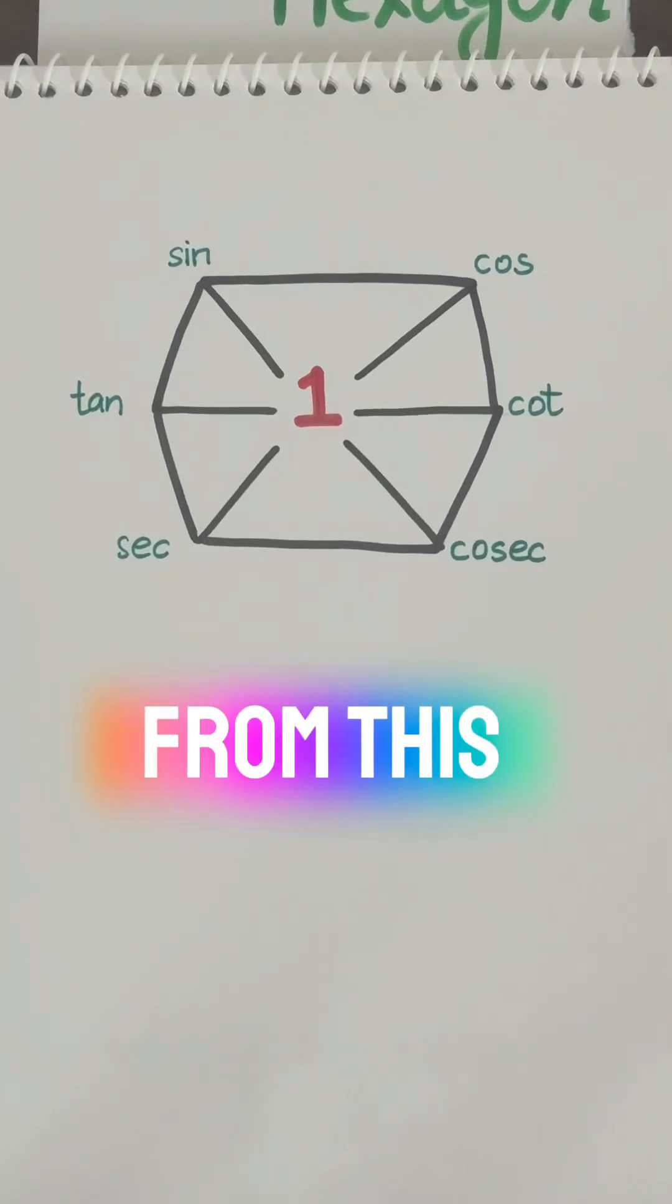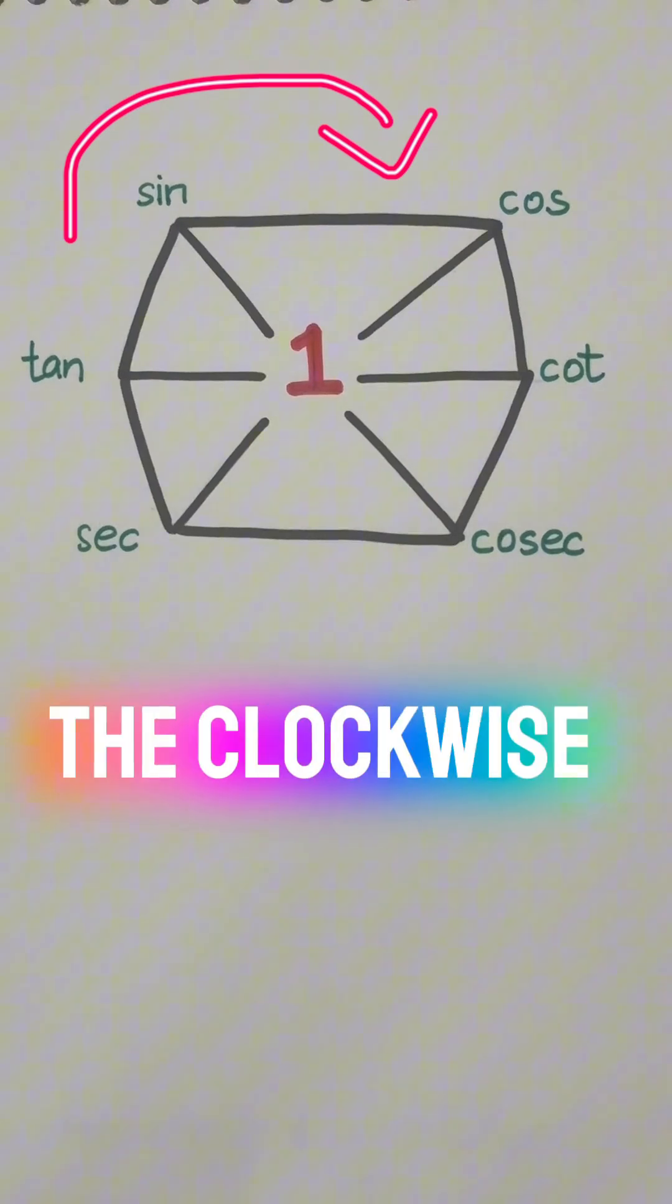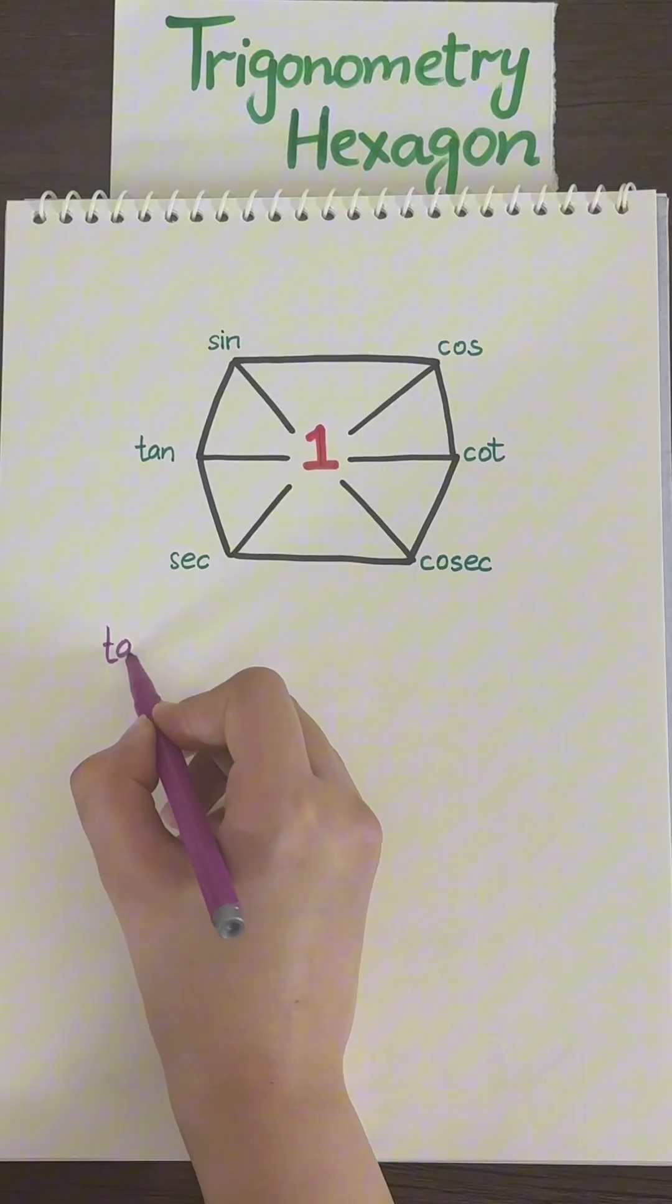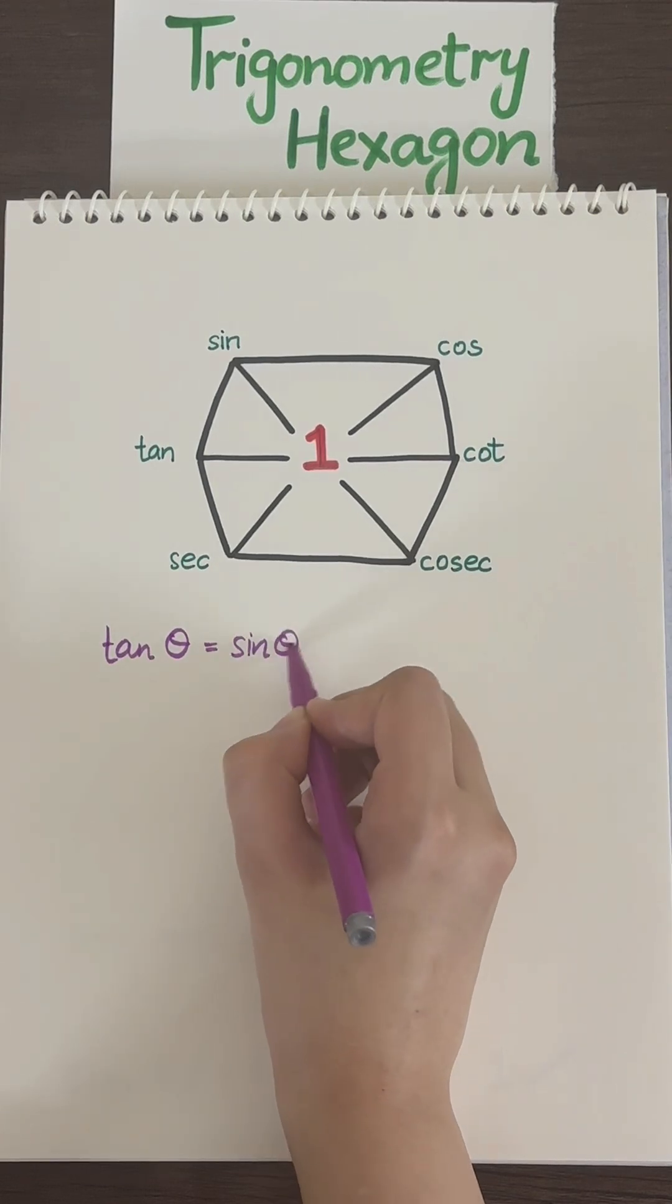So what formulas can we get from this? Let's start on the outside and going in the clockwise direction. So let's say if we have tan, sine, and cos, this gives us tan theta equals sine theta over cos theta.